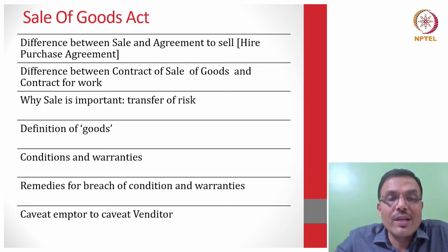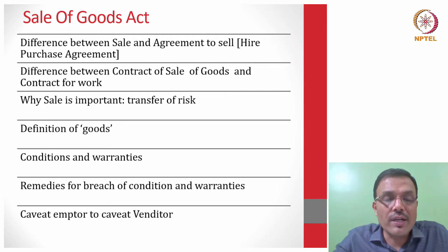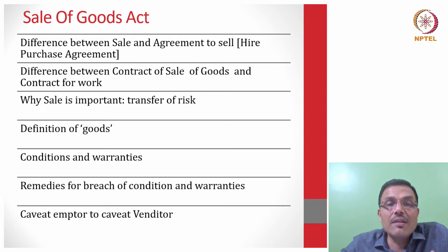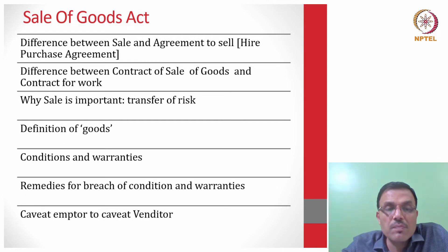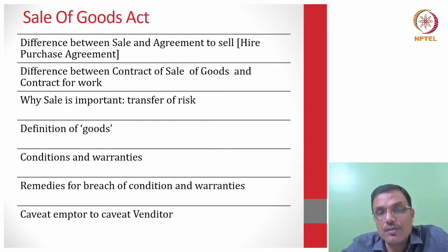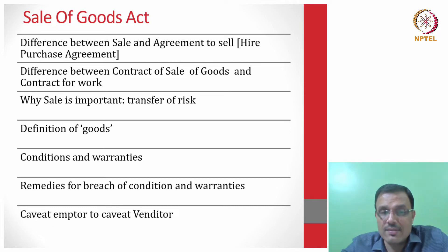If you compare the Sale of Goods Act with the Indian Contract Act, you will notice that the Indian Contract Act defines the remedies for breach as being damages, along with the law of unjust enrichment and restitution. These are the two remedial provisions that the Indian Contract Act 1872 still has.